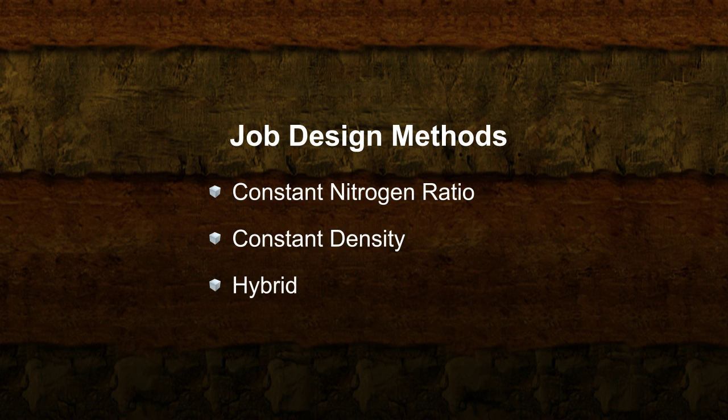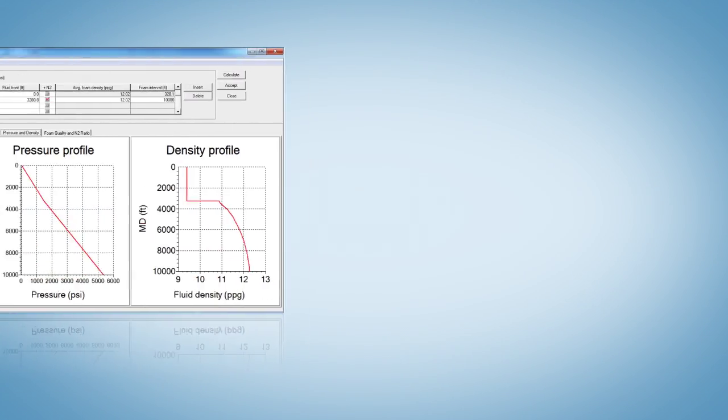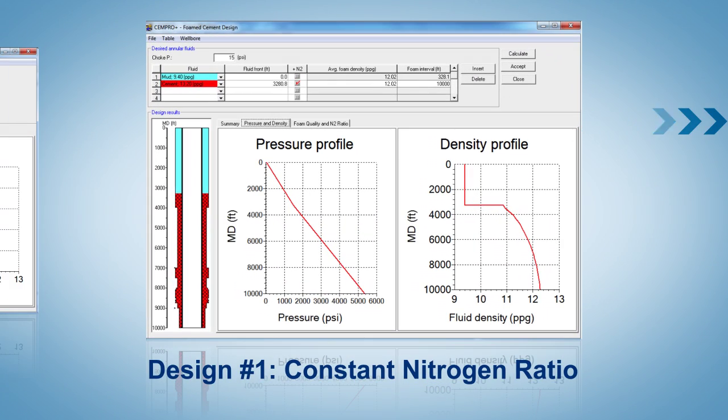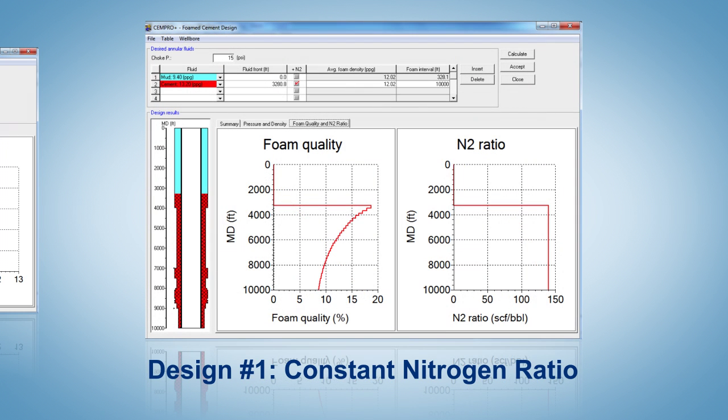Here are three job design methods. In this method, the nitrogen rate is held constant throughout the job, thus the slurry density will increase as depth increases. The merit of this method is the simplicity of field operation. Only one nitrogen ratio is required.